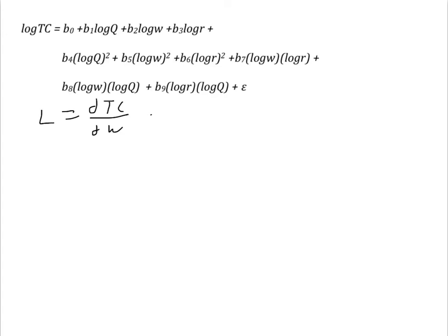Using the chain rule, I can write the partial derivative of TC with respect to W as the partial derivative of TC with respect to the log of TC, times the partial derivative of the log of TC with respect to the log of W, times the partial derivative of the log of W with respect to W. Why would I want to do that? Because it makes my job a bit easier. We know that the partial derivative of the log of W with respect to W is just 1 over W.